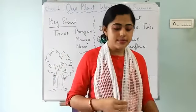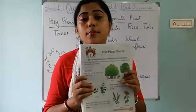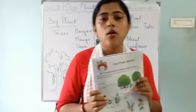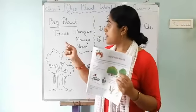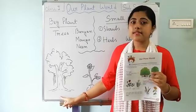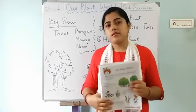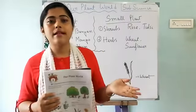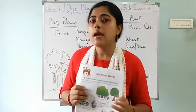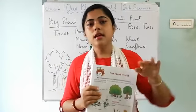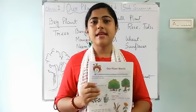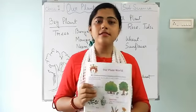Okay everyone. Read the first page of this chapter about big plants and small plants. You have to know what are the big plants, why they are big plants, and their examples — the trees like banyan, mango, and neem — which look like this and have a strong stem. Small plants do not have a strong stem; they have a thin stem, a little bit hard, but their height is small. Learn this and remember these things. That's all.